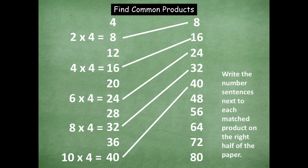Now you're going to write the number sentences next to each matched product on the right half of the paper — the same thing you just did but for the other side. So write eight equals one times eight, and go ahead and do that for 16, 24, 32, and 40. Pause the video, do that, and then click play when you're ready for the next step.